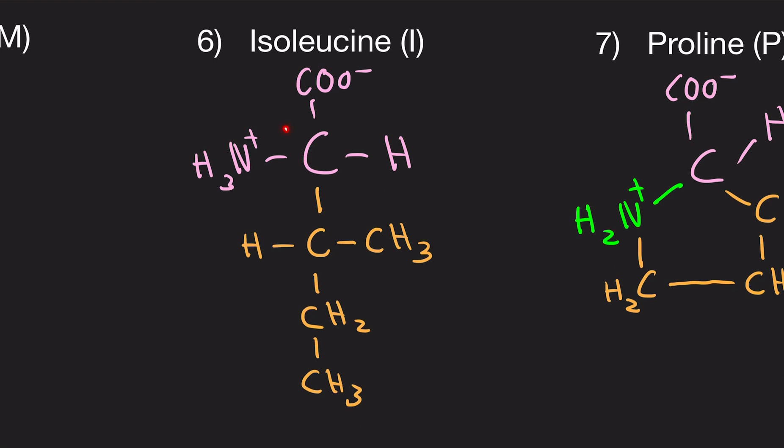So remember, this is the alpha carbon. This is not it. This is the alpha carbon. That's the original carbon we're working with. That stays the same. All we're doing is just changing the R group. So this is isoleucine's composition.